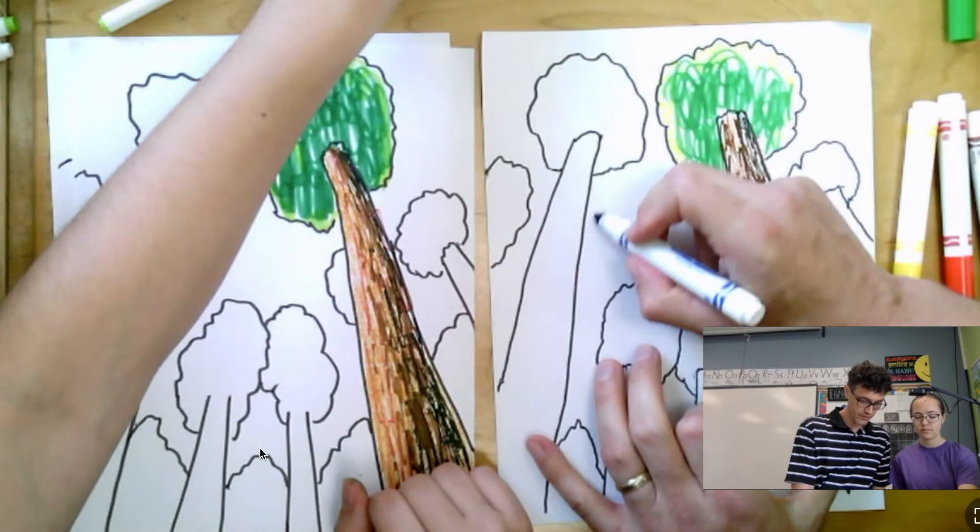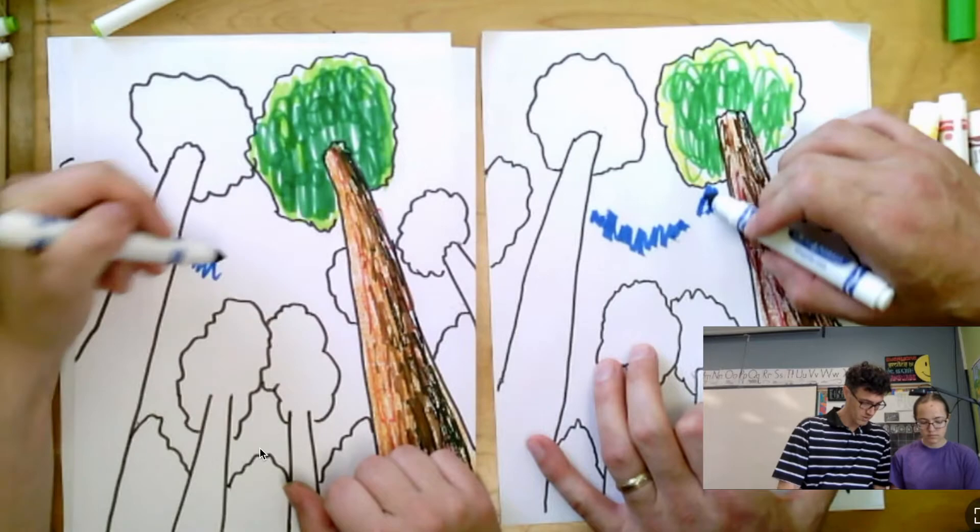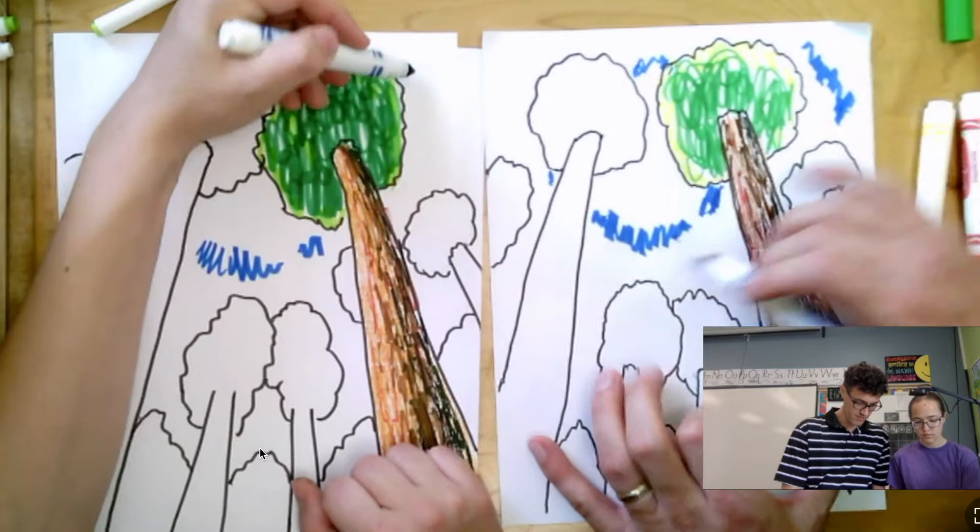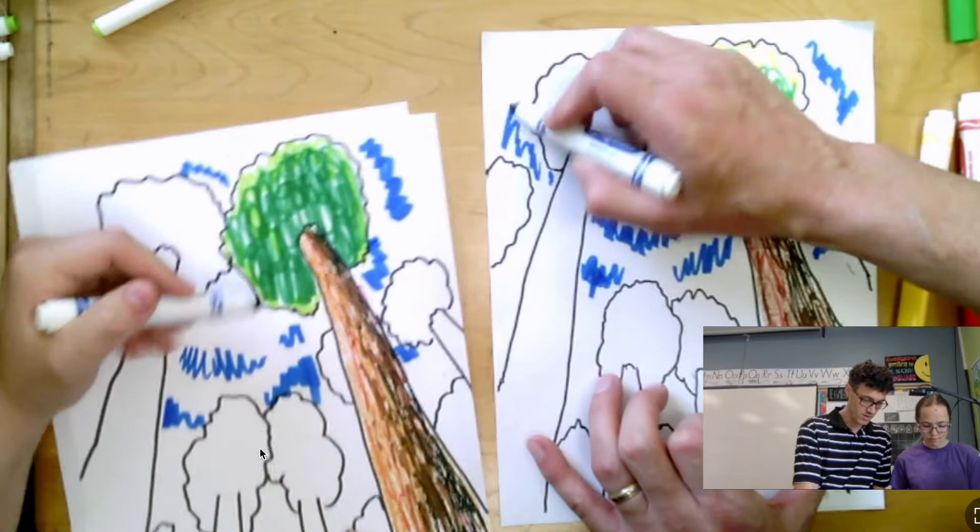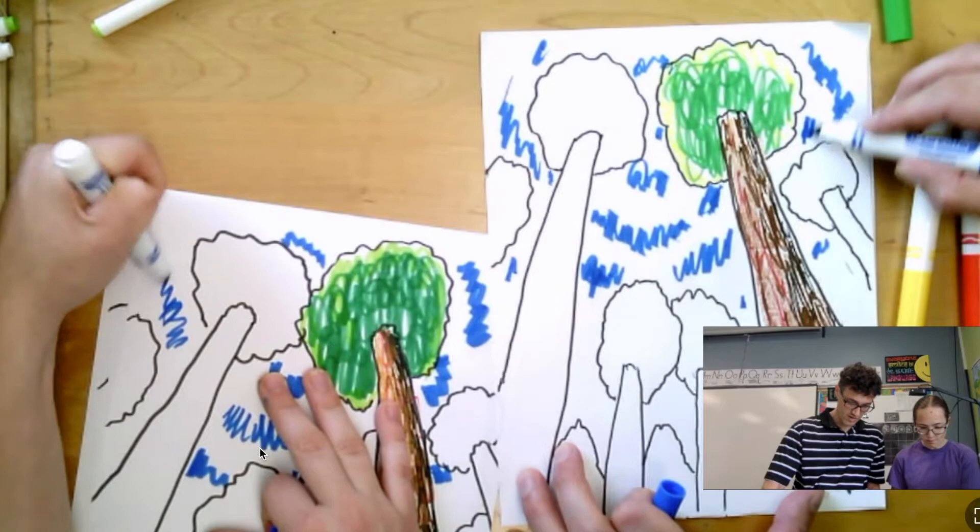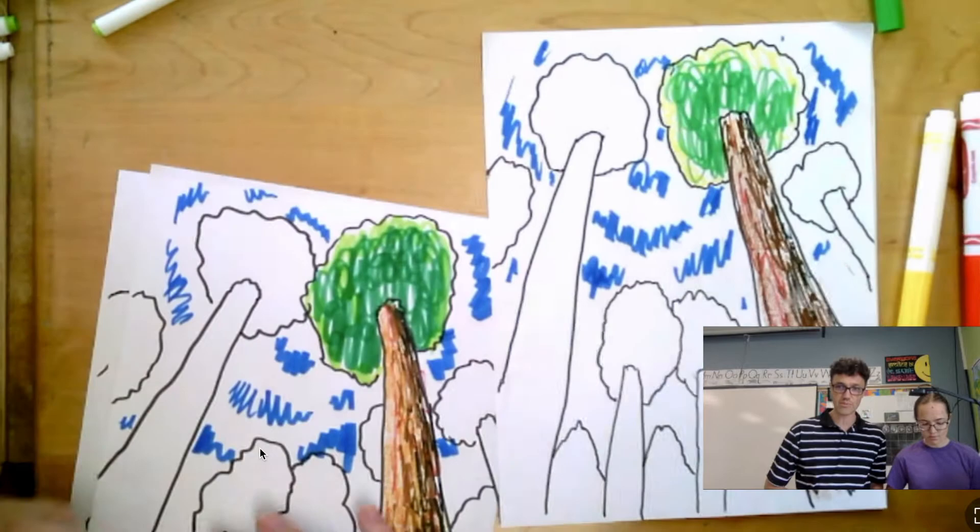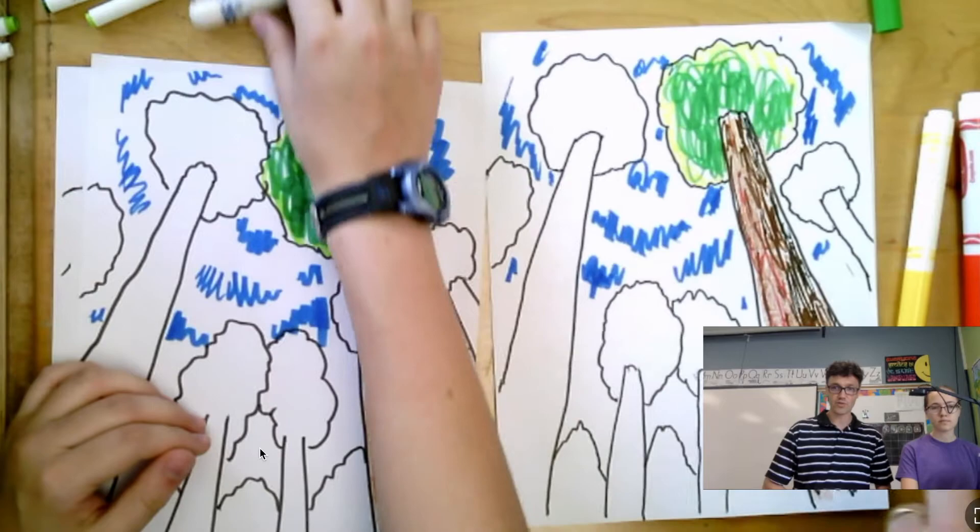And for the sky, we're going to do a similar kind of scribble with marker and then finish it with crayons. We're going to make a bit of a swirl or kind of a circular pattern or another with scribbles in the sky. There we go, and we'll color over the sky with light blue.